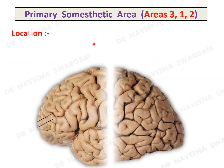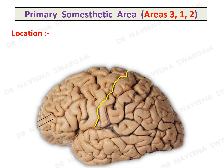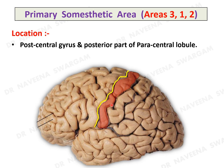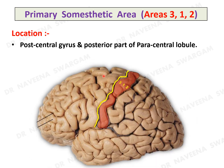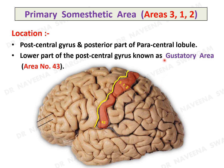Primary somesthetic area: it occupies the postcentral gyrus with area numbers 3, 1, and 2 arranged vertically from before backwards. It also extends onto the medial surface of the parietal lobe behind the central sulcus on the posterior part of the paracentral lobule. The lower part of the postcentral gyrus is known as the gustatory area, area 43.